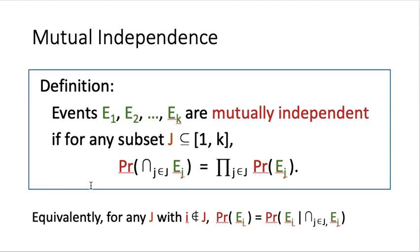The intuition here is exactly the same as we talked about for independent events. The chance of a certain event Ei happening will not change even if somebody tells you that some other events are occurring. No matter what people tell you about other events happening, this new information should not affect your view about how event Ei will occur. If such a case is happening, then the events are mutually independent.